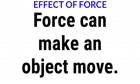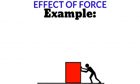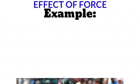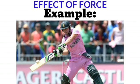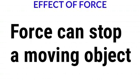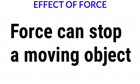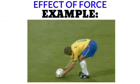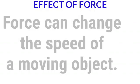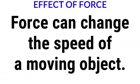Effect of force. Number one: force can make an object move. Example: you can push a small box to move it, or you can hit a ball with a bat to move the ball. Number two: a force can stop a moving object. Example: force applied to stop a moving ball.